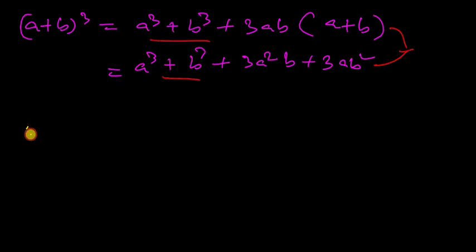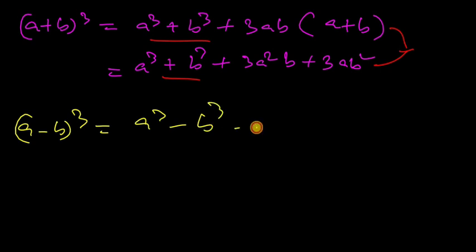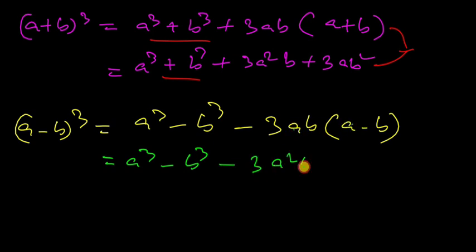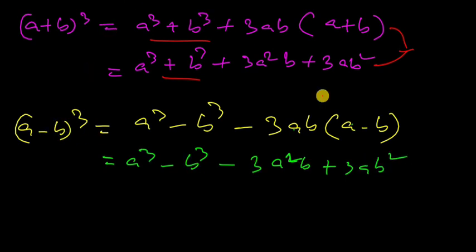This is (a − b) whole cube. This equals a cubed minus b cubed minus 3 times a squared b plus 3ab squared — that is, a cubed minus 3a squared b plus 3ab squared minus b cubed. This is the (a − b) whole cube formula.